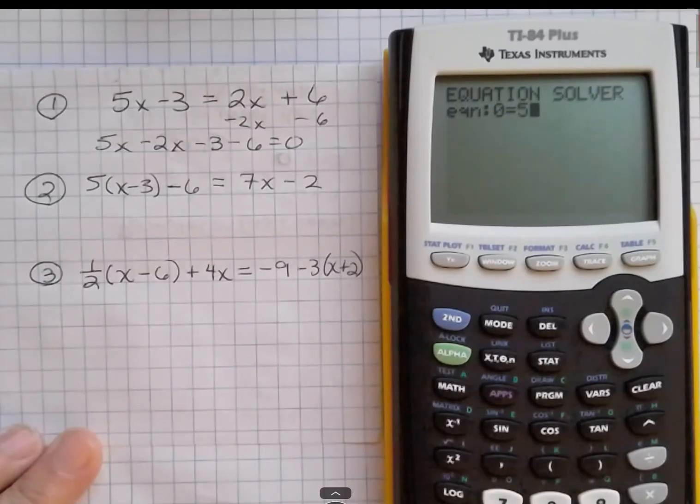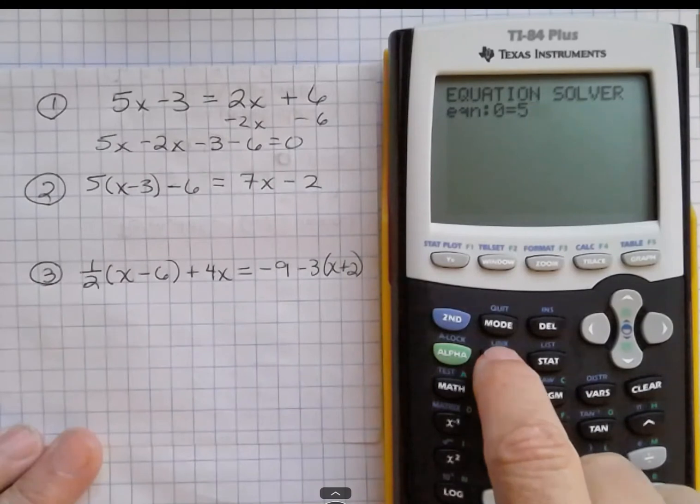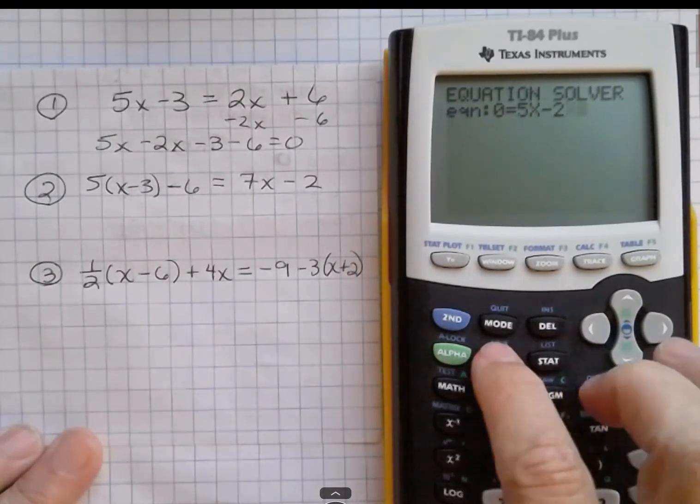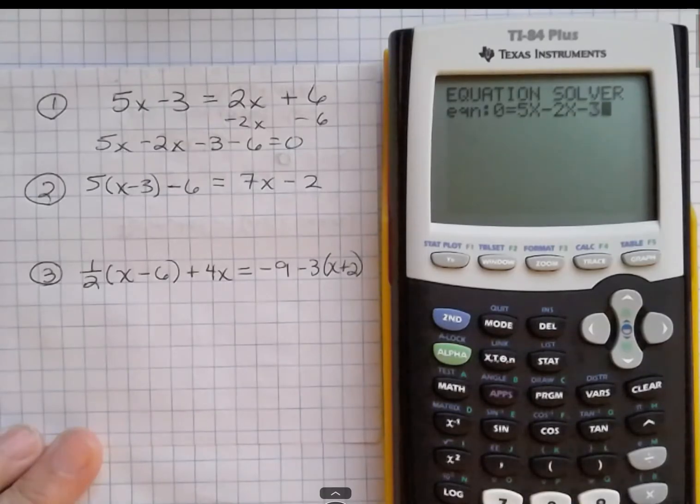I'm going to enter that 5, and then for x, I'm going to use this button here, 5x minus 2x minus 3 minus 6.